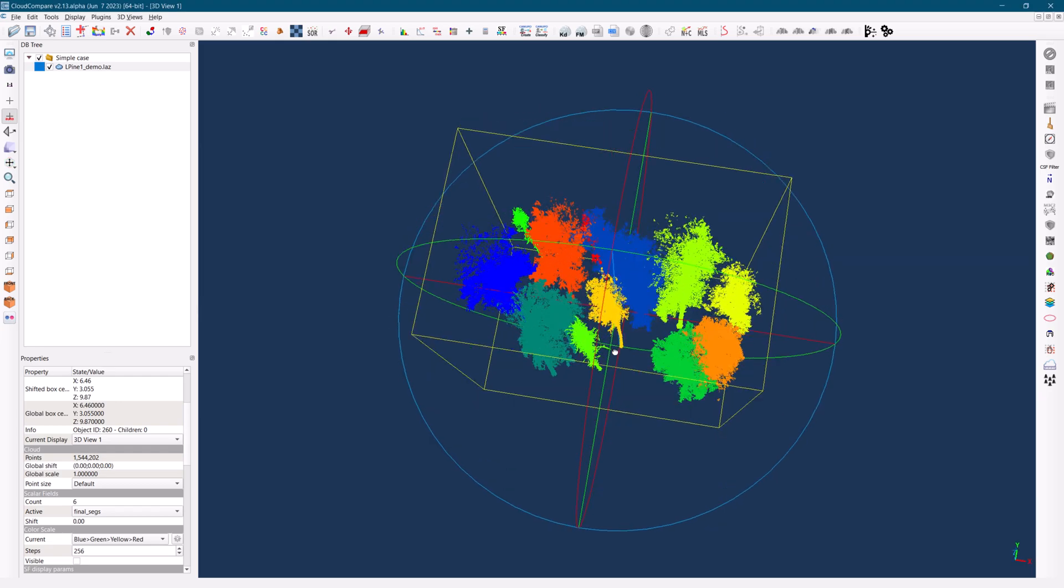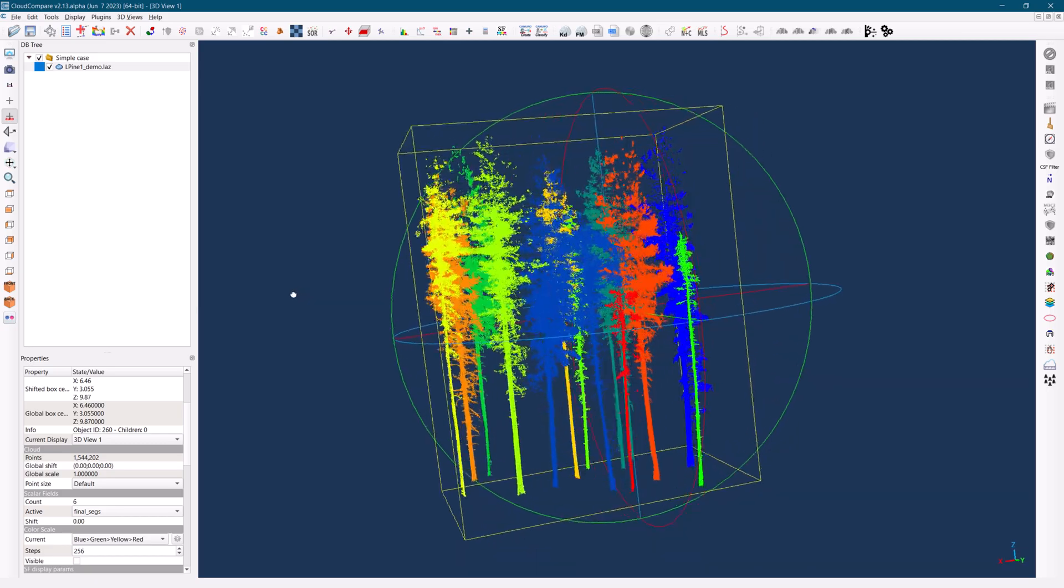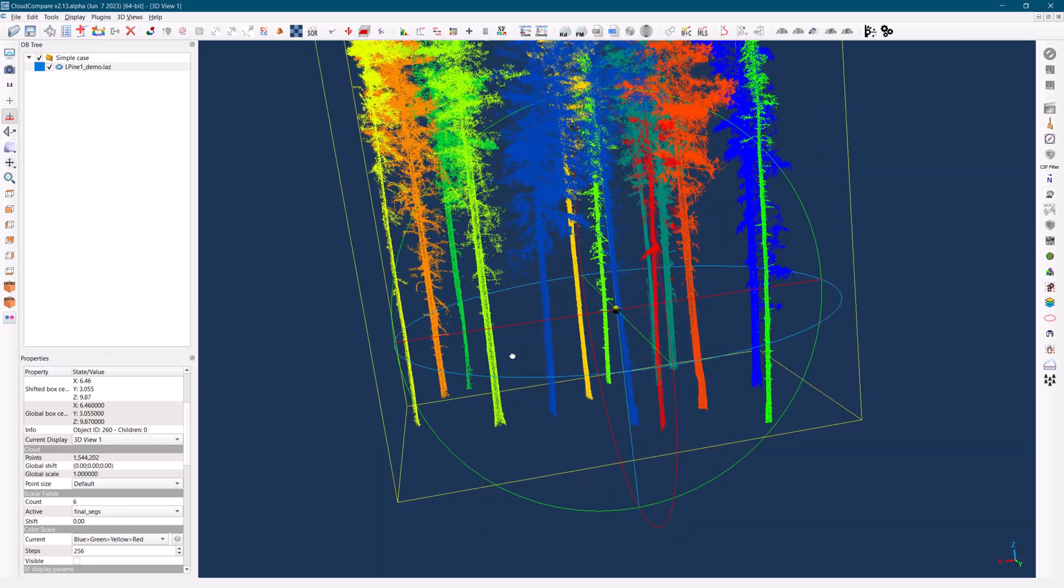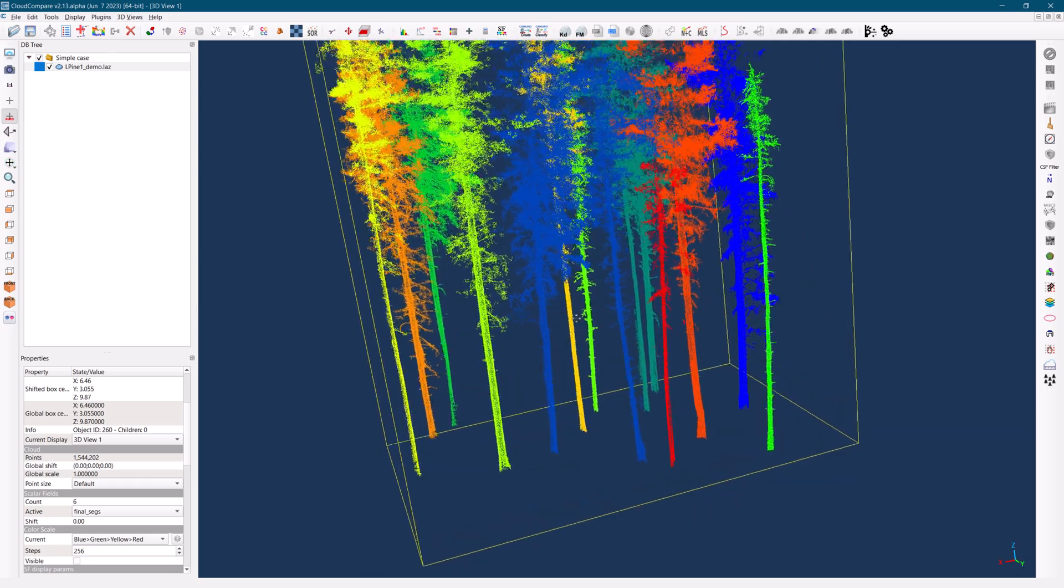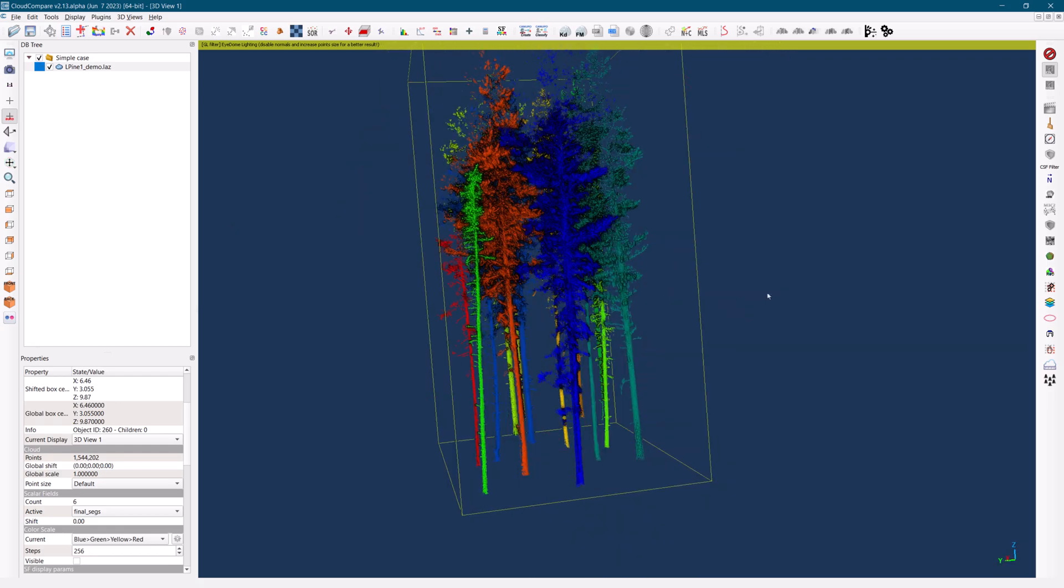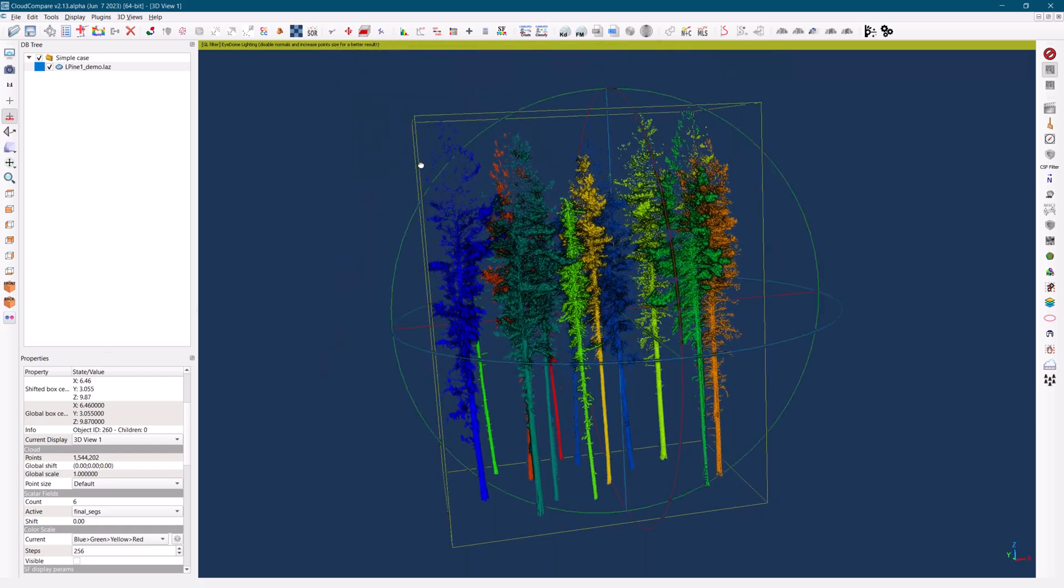At this point, we can examine the results of the segmented trees. If the rendering appears unclear, you can activate the eye-dome lighting effect for improved visualization.